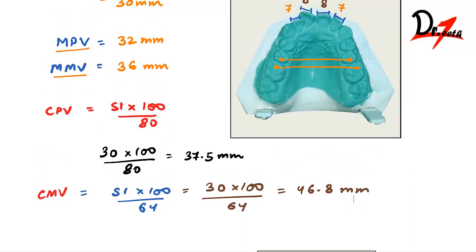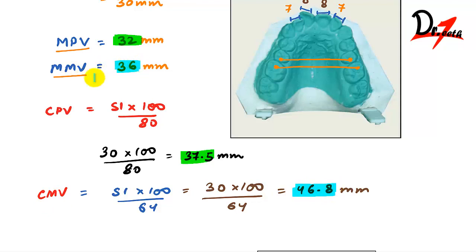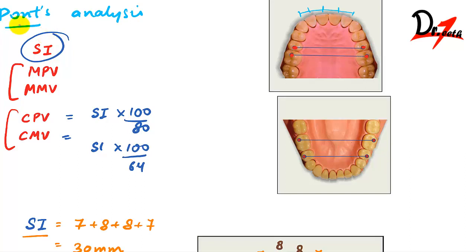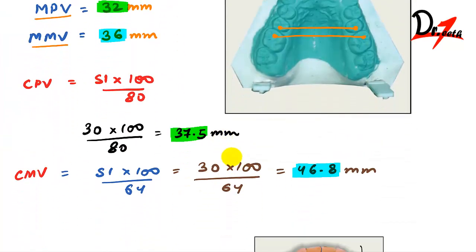Comparing calculated vs measured values: CPV is 37.5 mm but we measured 32 mm — the measured is less, meaning the arch is narrow and needs expansion. Similarly, CMV is 46.8 mm but measured MMV was 36 mm — the arch is narrower and we need lateral expansion. Note: for the mandibular arch in Pons analysis, use the distobuccal cusp of the first permanent molar instead of the mesial pit.